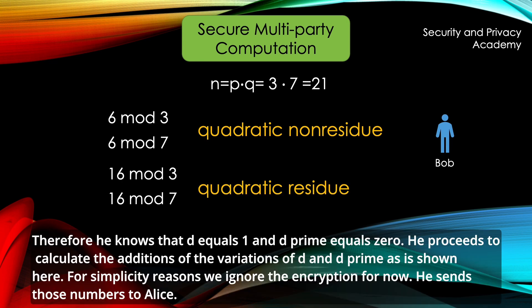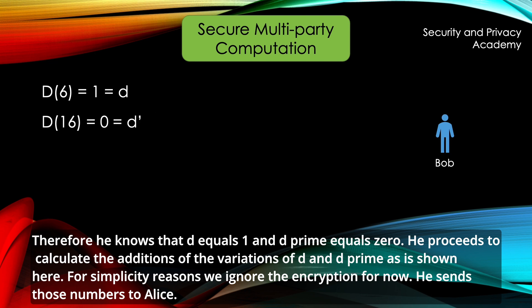Therefore, he knows that D equals 1 and D' equals 0. He proceeds to calculate the additions of the variations of D and D' as is shown here.